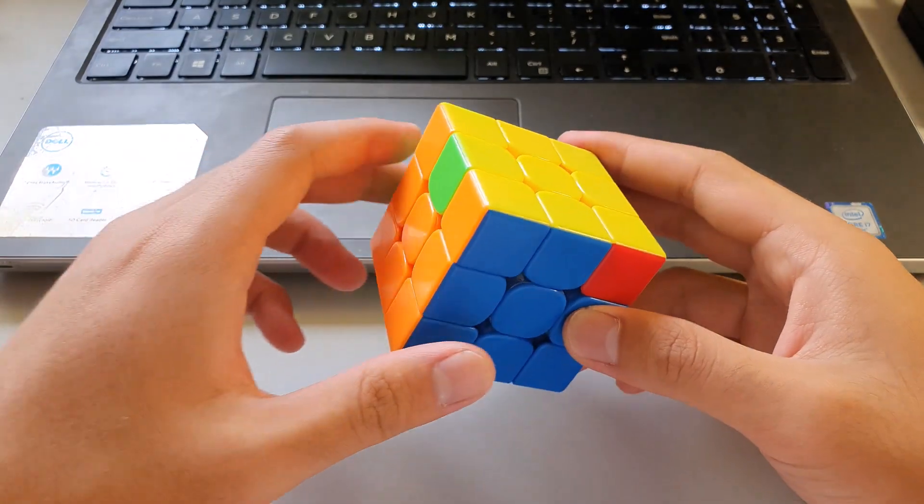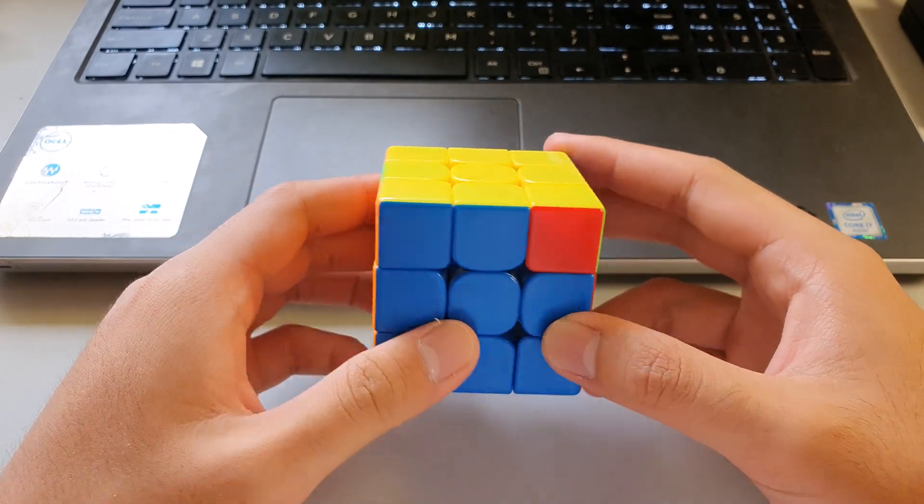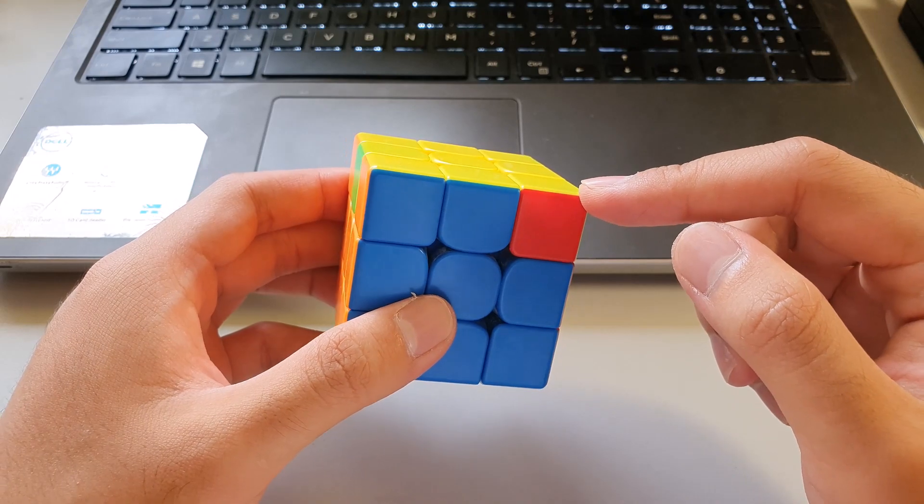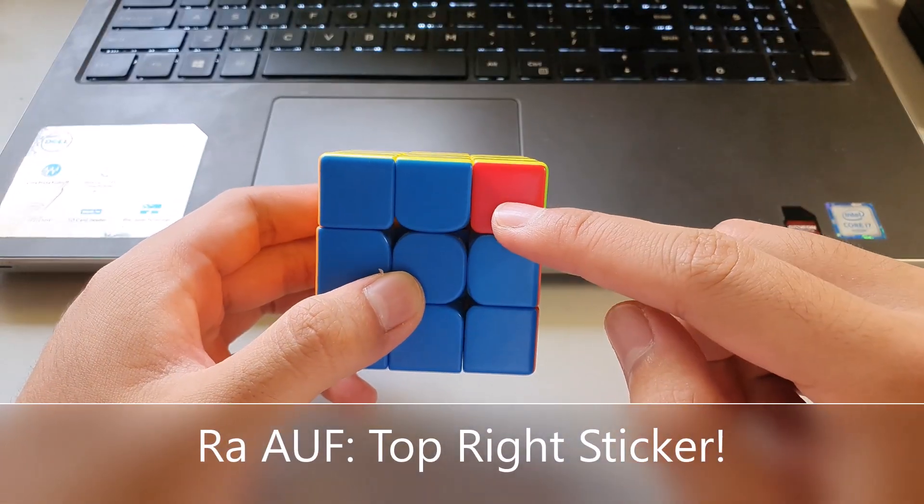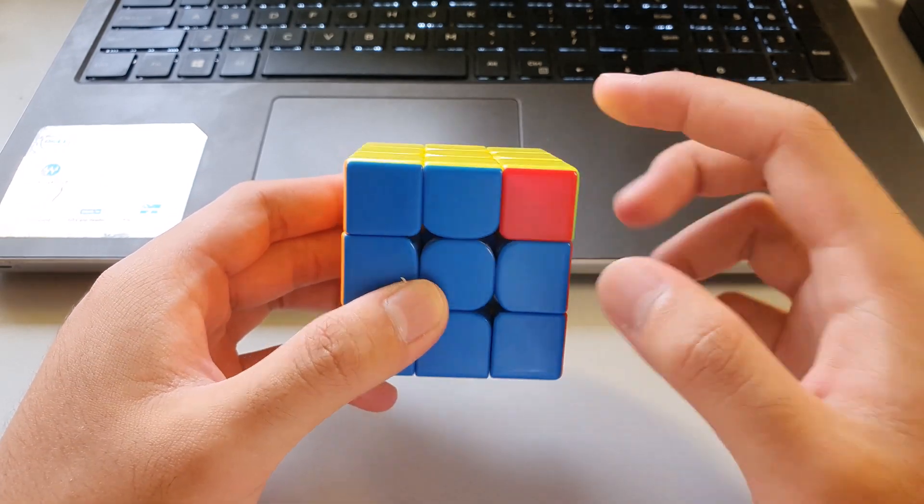The AUF for the RA perm is slightly more difficult to recognize. Something to know about this algorithm is that this corner does not move during the algorithm without the AUF. So this sticker here, the red sticker, will represent the color that will be at the front after the algorithm.